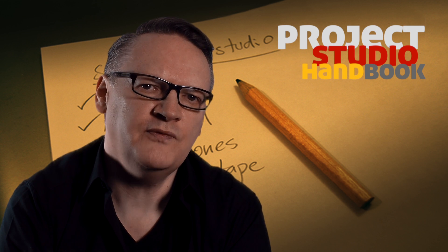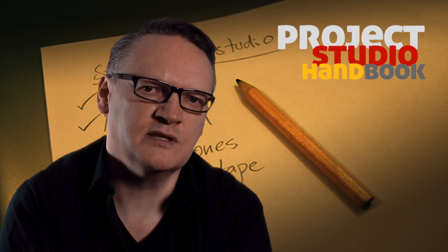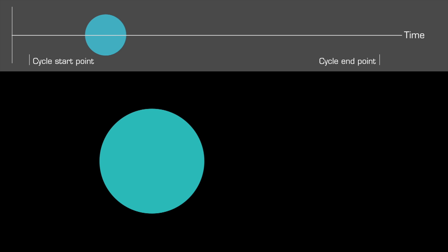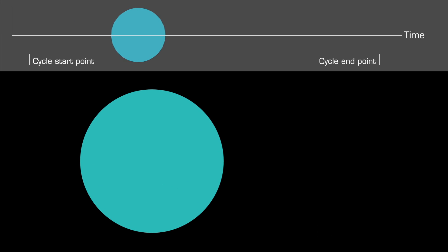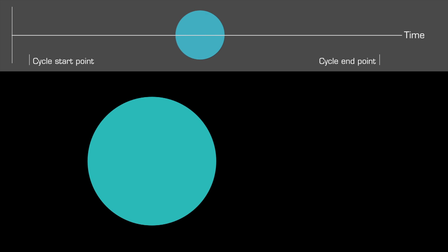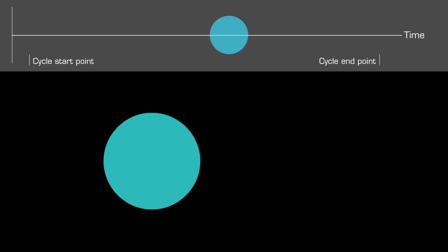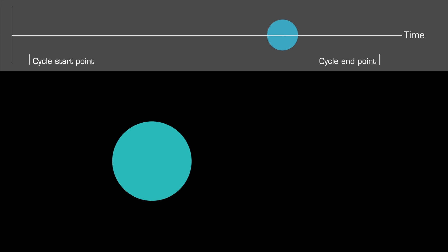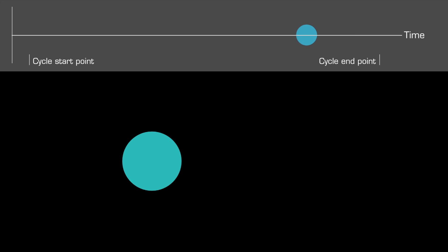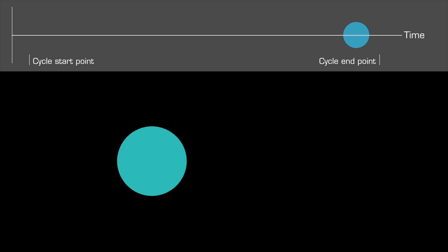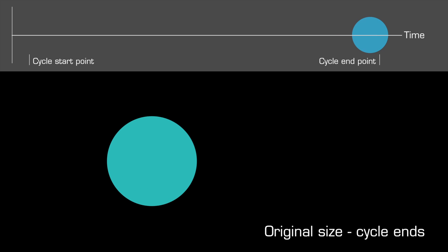A cycle of vibration goes like this: the source starts at original size, then expands and gets bigger, reaching maximum size — bigger than normal. The source then contracts and gets smaller, returning to original size, then continues to contract and gets smaller than normal, reaching minimum size. The source then expands again and gets bigger, and finally returns to its original size.